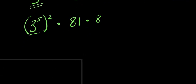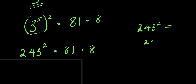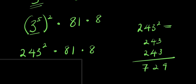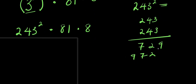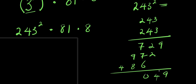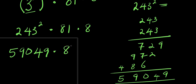Now we find three to the power ten. Three to the power ten equals three to the power five, squared. Three to the power five: three times three is nine, three times four is twelve, three times two is six plus one is seven, four times two is eight plus one is nine, giving us two hundred and forty-three. So three to the power ten is two forty-three squared, which is fifty-nine thousand and forty-nine.